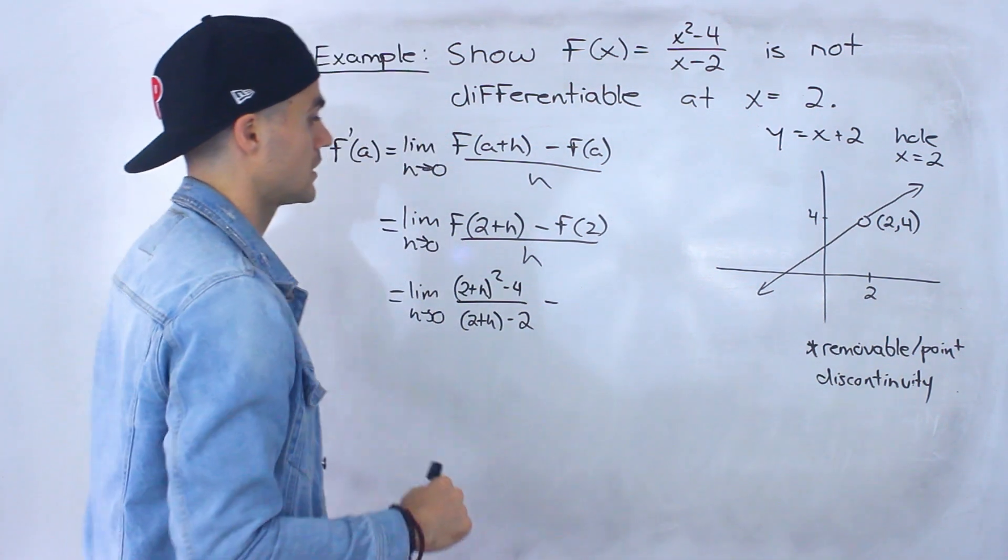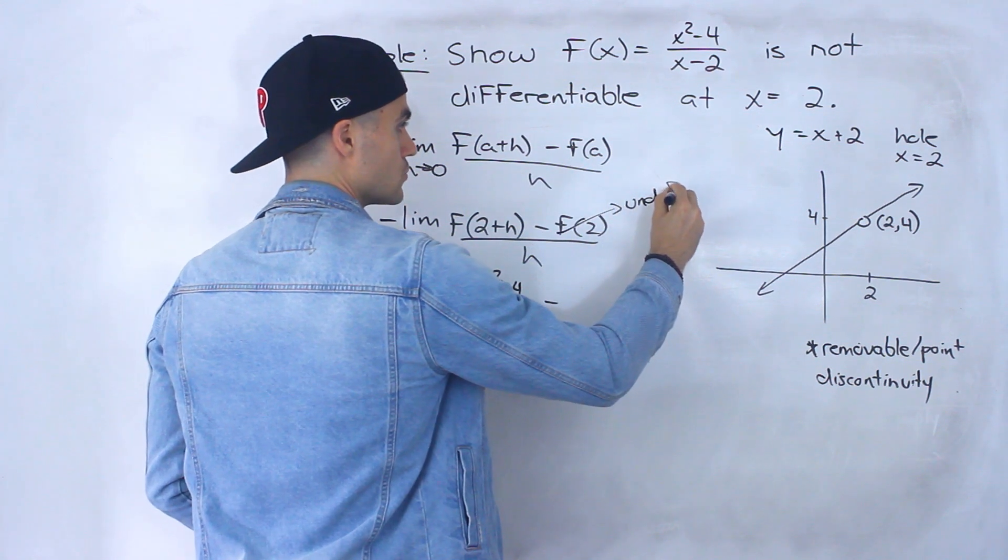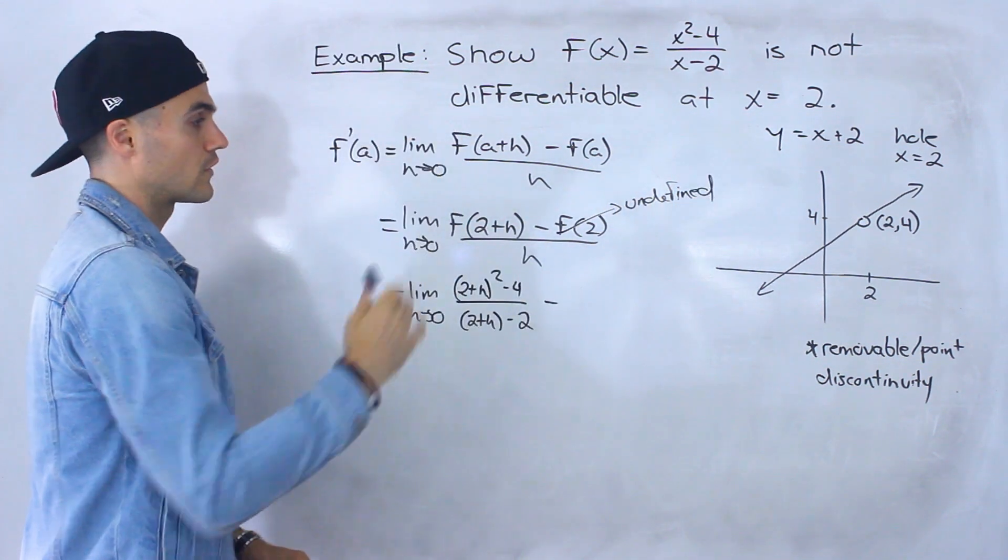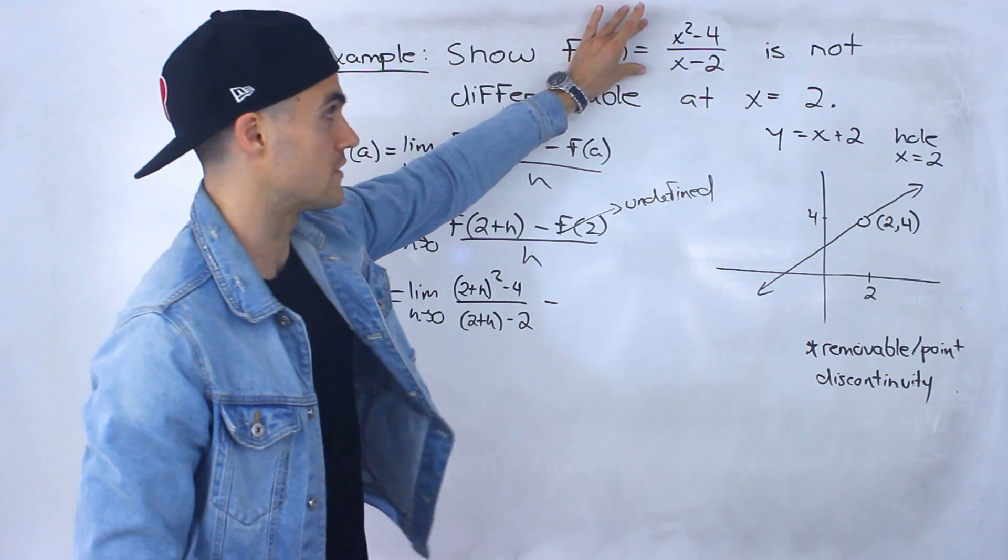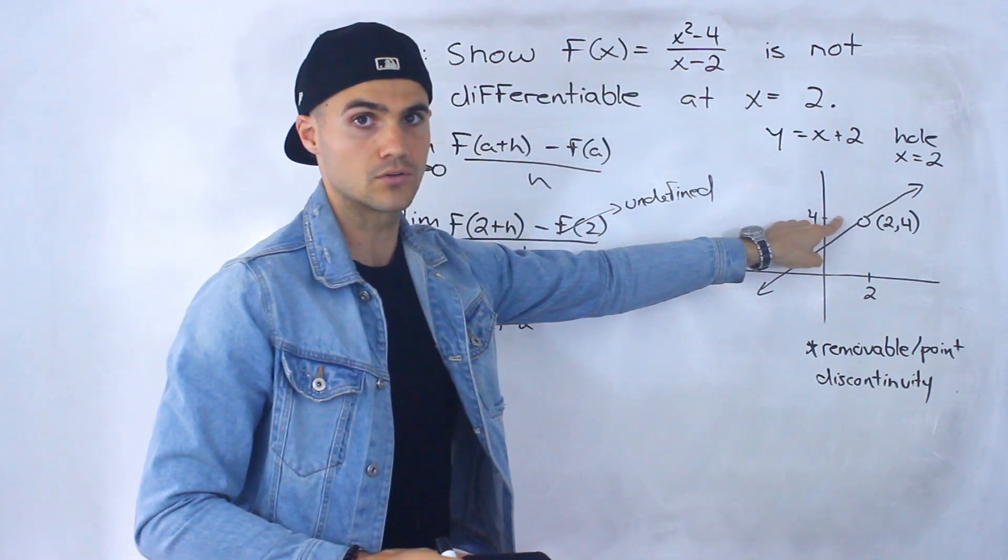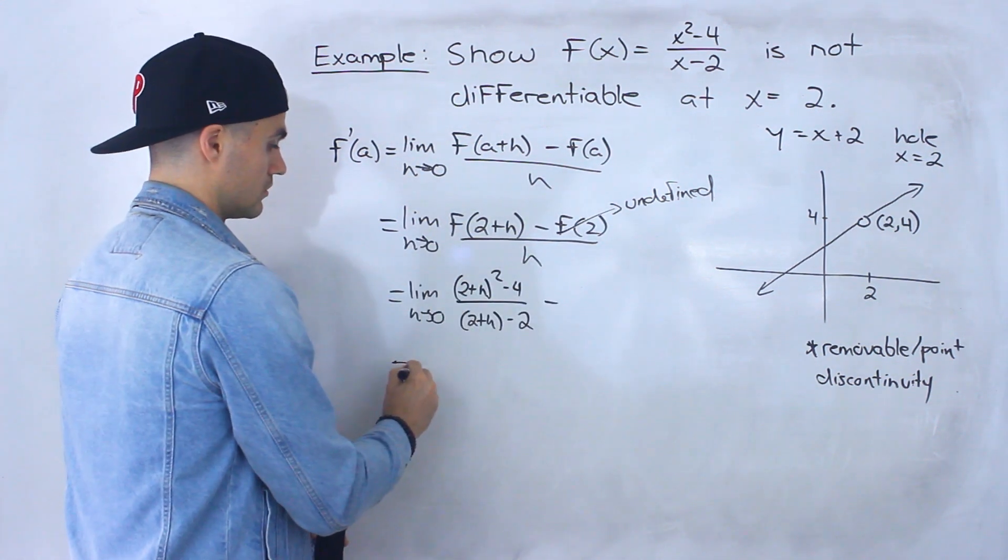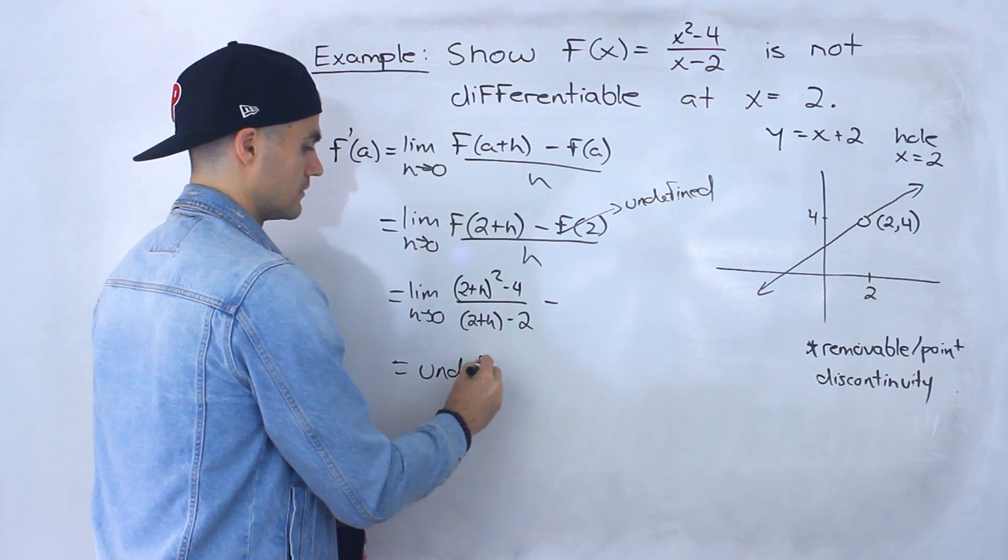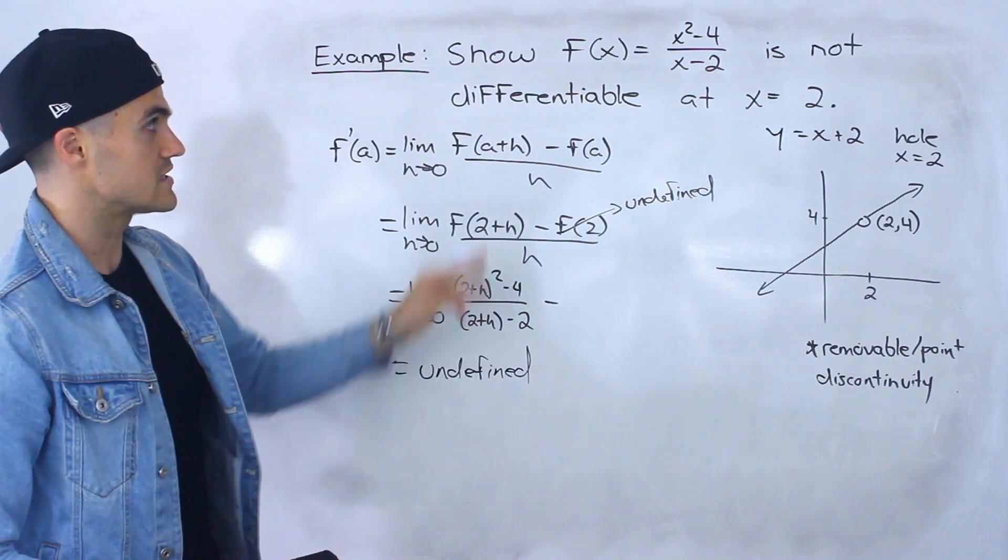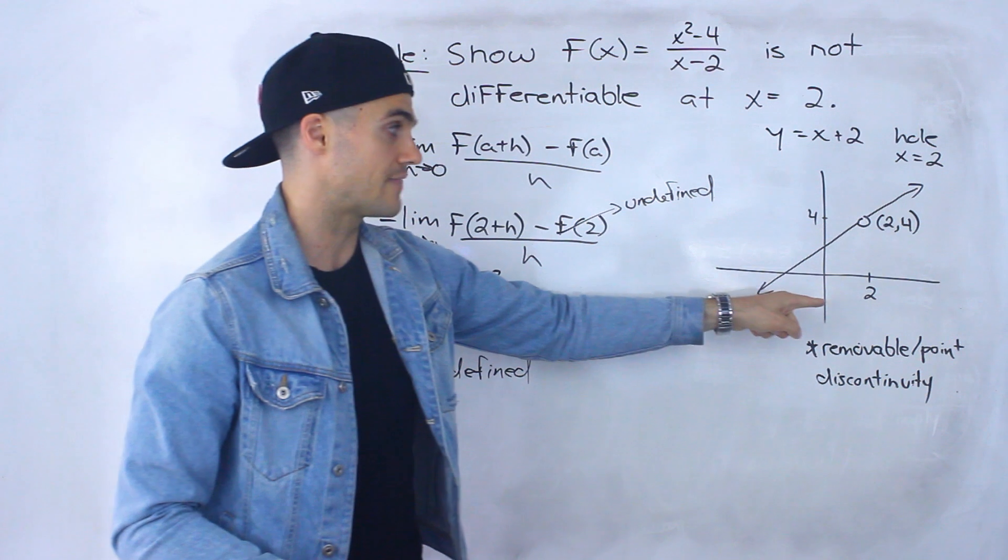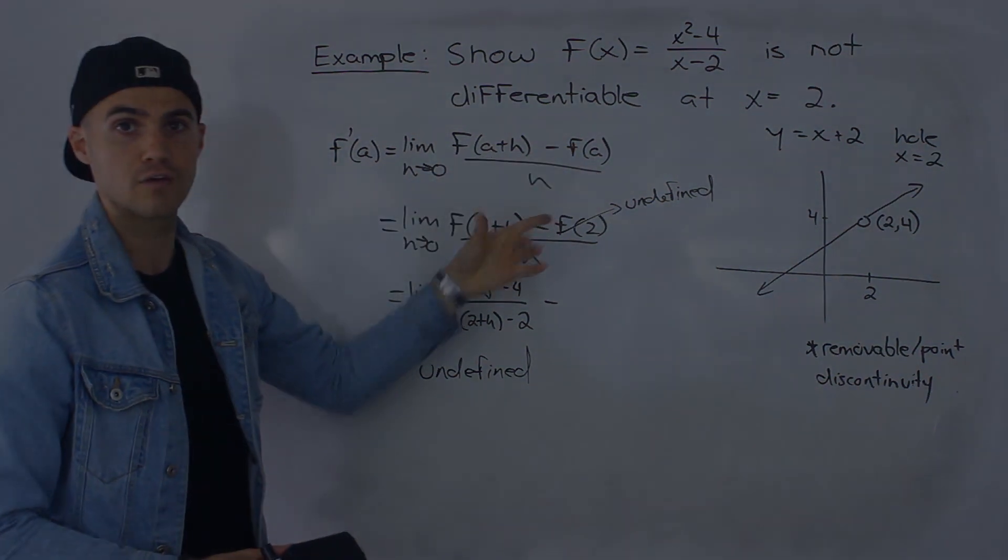It's going to make the numerator and the denominator equal to 0. And so basically very similar to when we had an infinite discontinuity or that vertical tangent, notice f of 2 is undefined for this function. There is no y value there. And so what that means is that this limit just overall is undefined. This function is not differentiable at this x value of 2 because this limit here does not exist because f of 2 is undefined and does not exist.